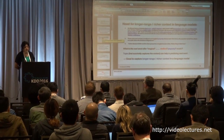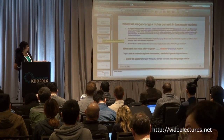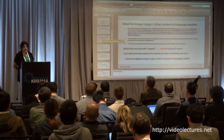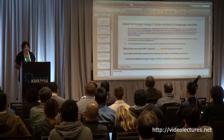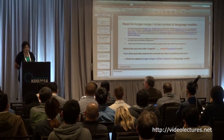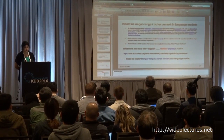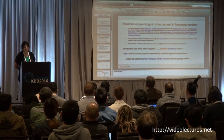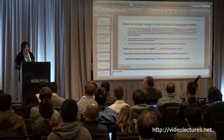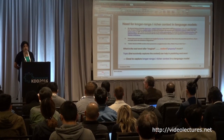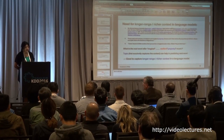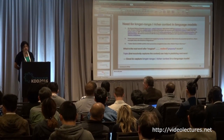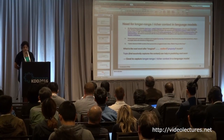The motivation is: suppose you want to predict what is the next word following the word 'magical' — is it 'realism,' 'property,' or 'music'? If you knew that at the beginning of the paragraph you're talking about Salman Rushdie, and you knew he's related to magical realism and not magical property or music, you'd have an easier time figuring out what the next word should be.